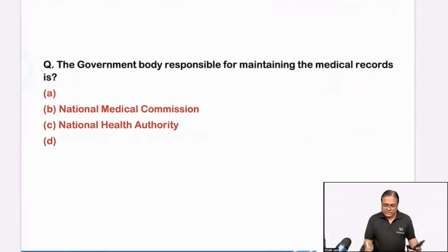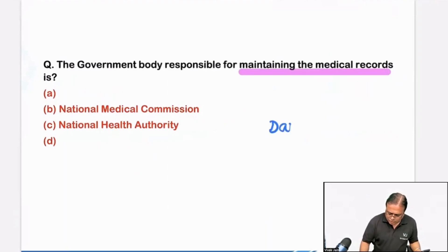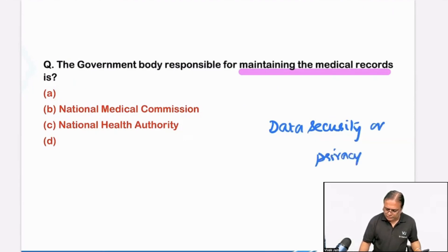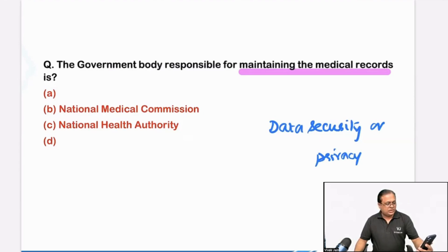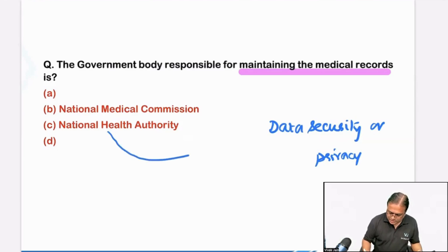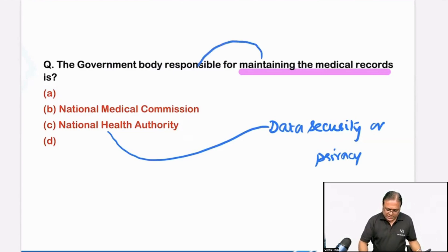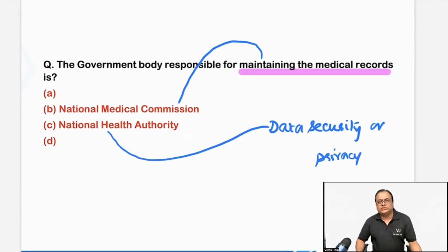Students, in this question there was confusion. Two types of questions were told to me: one was maintaining medical records, the second was data security and privacy, because your answer will depend on this. Could you please confirm in the chat box? Skewness was moments — that is correct. If it was related to security, then in the main videos, if you remember, the National Digital Health Mission is responsible for data security. Overall, for maintaining medical records, your favorite body, the National Medical Commission, is the answer. Maximum students are saying data security was asked, so the answer is National Health Authority / National Digital Health Mission.